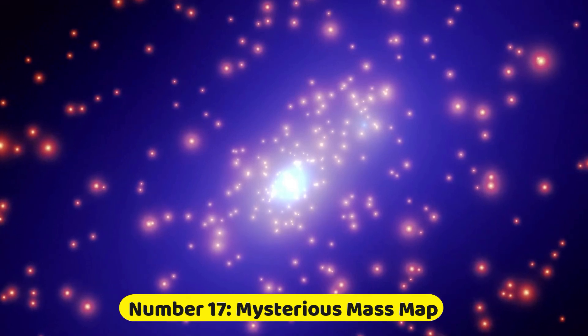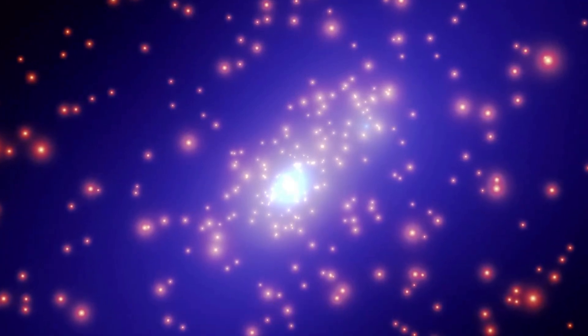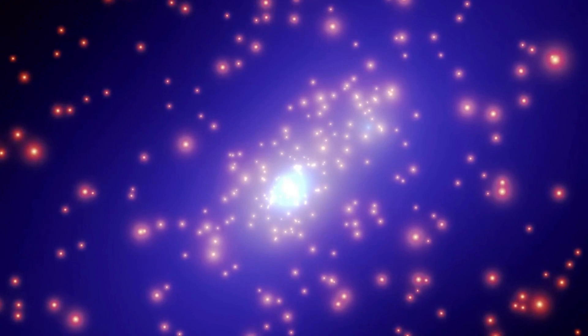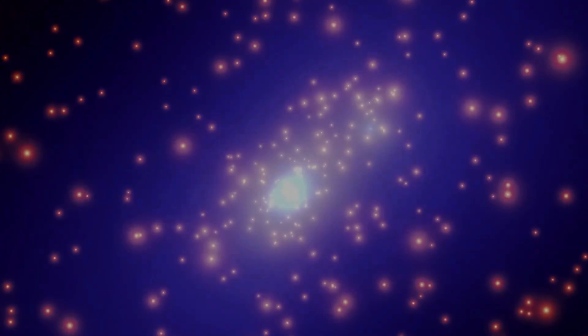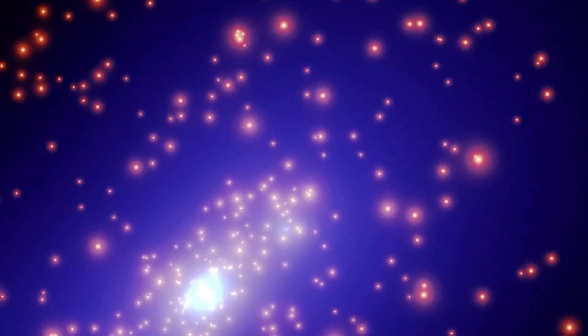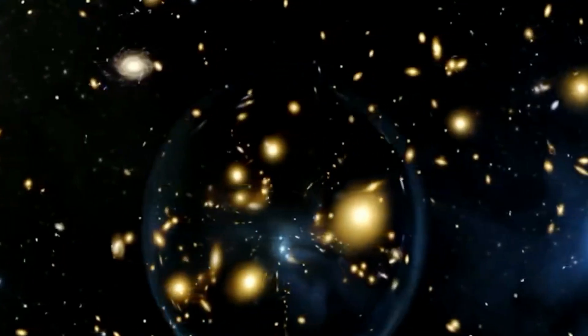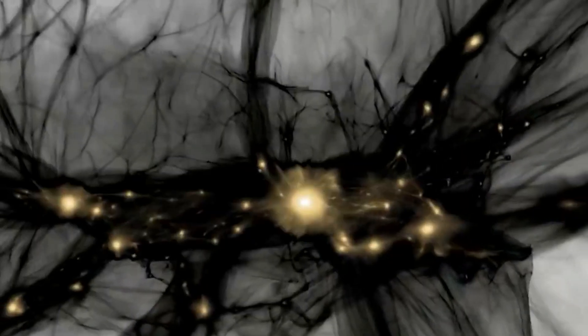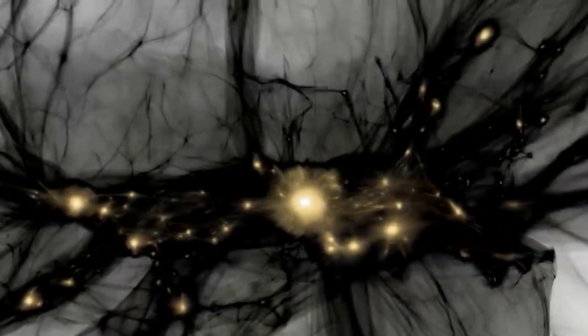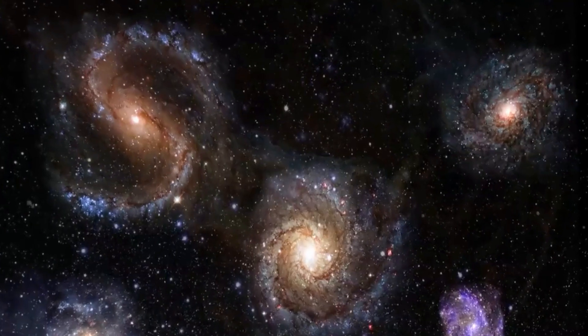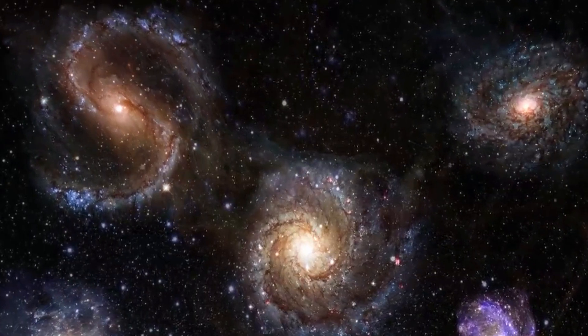Number 17. Mysterious Mass Map. CL 0024 plus 17 is a galaxy cluster located in the Pisces constellation about 4 billion light-years away. Astronomers study CL 0024 plus 17 to better understand the distribution of dark matter in the universe. Non-cluster galaxies appearing as blue smears near the image's center are located at a great distance.